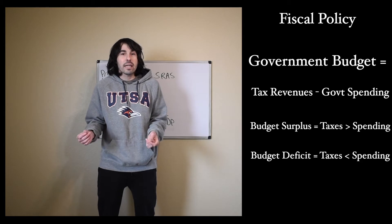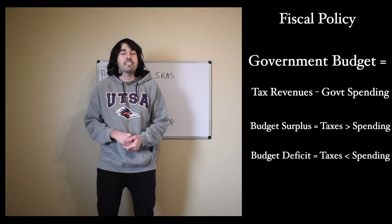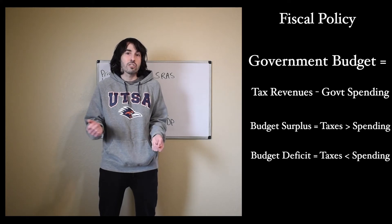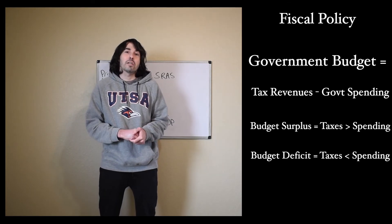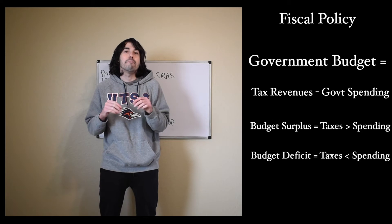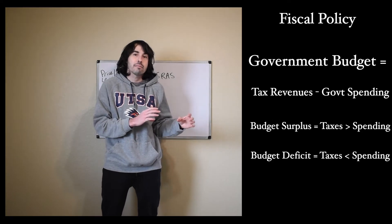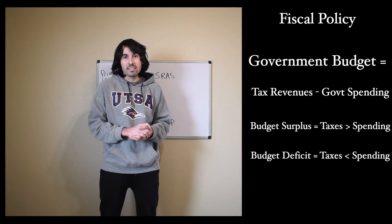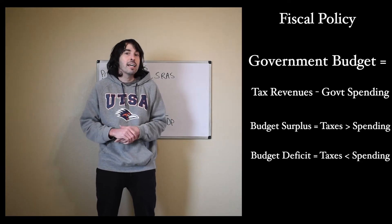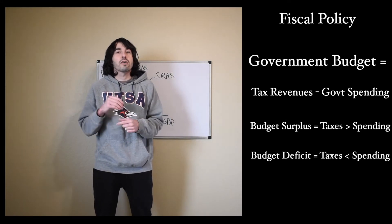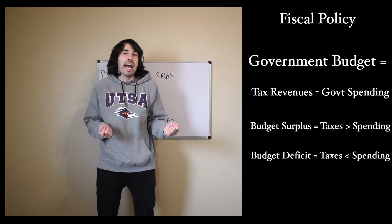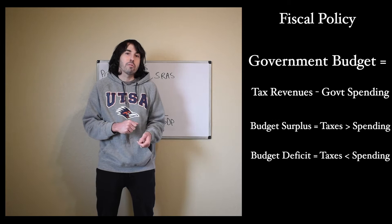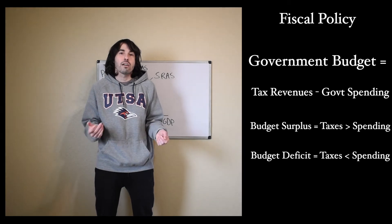For the government, instead of a paycheck, their income is coming from taxes, and government spending is like our spending. It's just any time the government buys goods and services. And so the government's budget is made up of taxes minus government spending. That's going to be your government budget. A government budget surplus is going to be when taxes are greater than spending, and a budget deficit is going to be when the government is spending more money than they're taxing. And in that case, they're going to have to actually borrow money in the form of treasury bills, or what we tend to call government bonds.